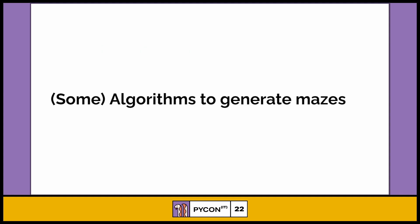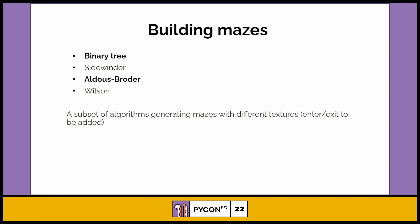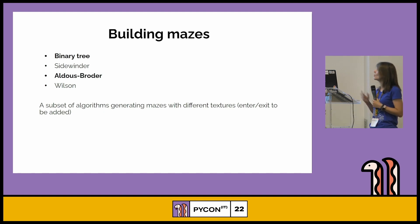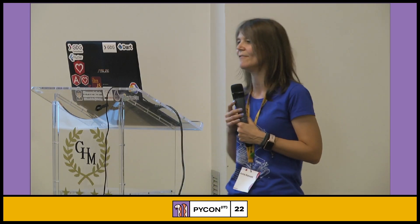Now we're going to cover some algorithms to generate mazes, and we'll be very fast here because I want to approach other more interesting technologies. We are going to see the binary tree and Aldous-Broder algorithms — the first is about tossing a coin and the other about a random walker. These are just a subset of algorithms to generate mazes with different textures, and we'll add an entrance and exit at the very end.